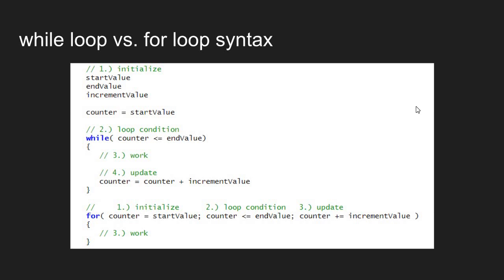Let's compare the for-loop syntax versus the while-loop syntax when creating a counter-controlled loop. In our while-loop syntax, we first initialize a conditional variable — some counter — that counts starting at a start value. We count up to an end value, do our work inside the body of the loop, and then the last thing we do inside the body is update our counter by some increment value, until the counter reaches the end value and we break the loop.